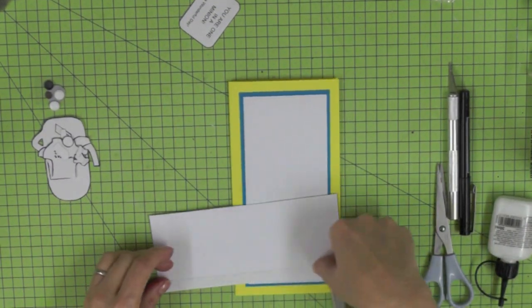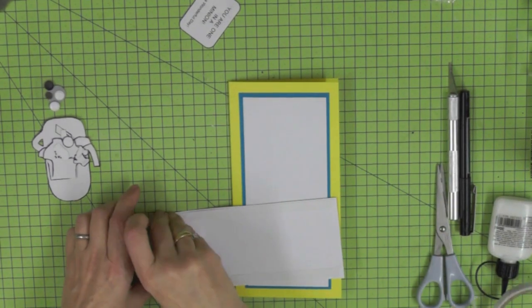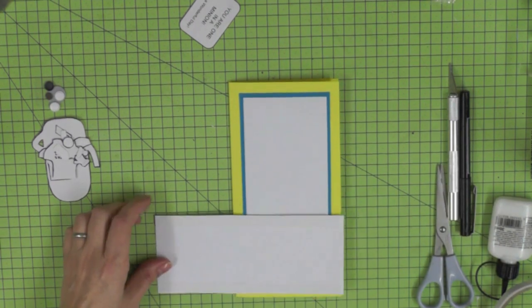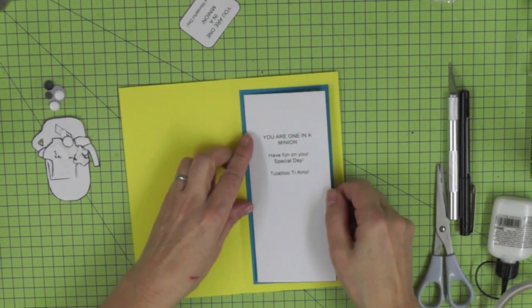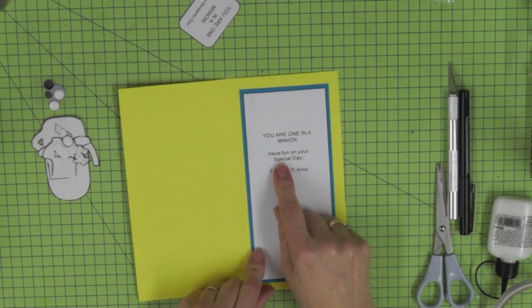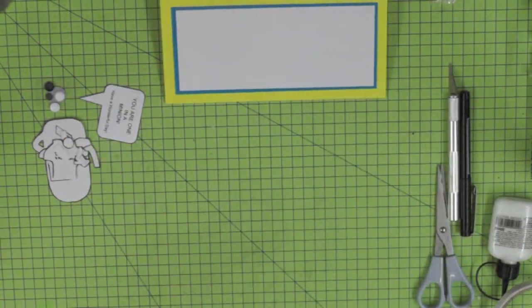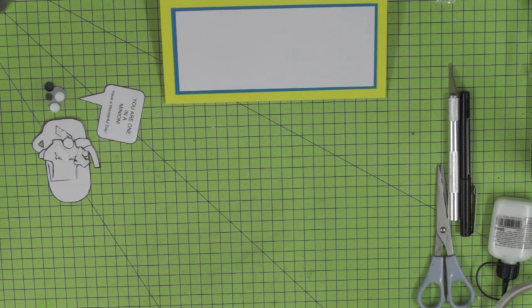Next you've got your little insert already cut out. Again this time with double-sided tape, you're going to attach that centrally to the inside of the card. The insert says 'you are one in a minion, have fun on your special day,' which I believe says I love you in minion. To all minions out there, if I've got my pronunciation wrong I do apologize.